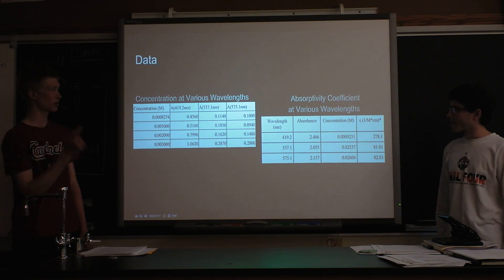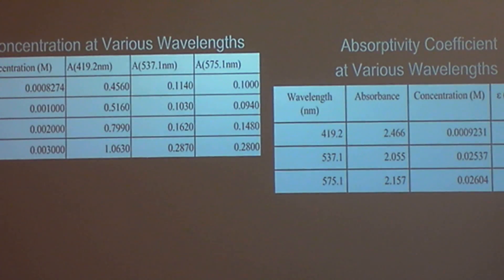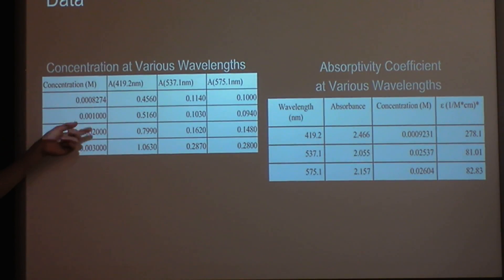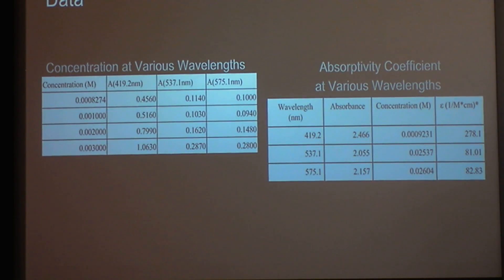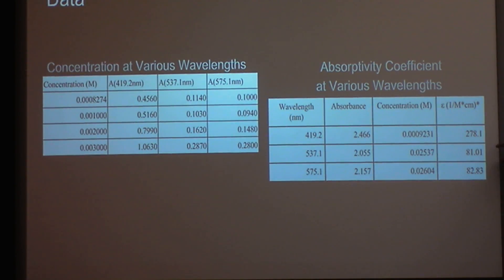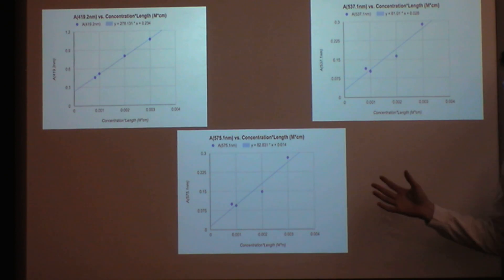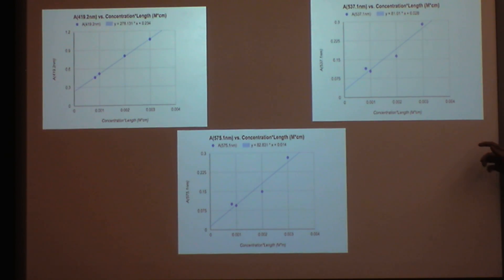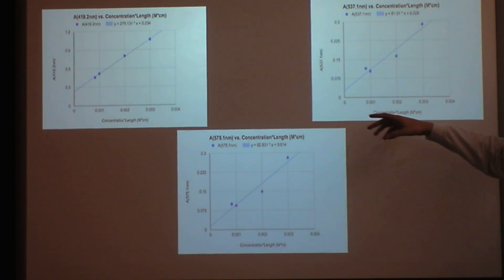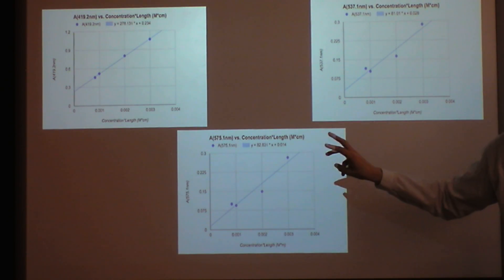Those peaks were at three specific wavelengths. We took known concentrations of blood and measured absorbance at those wavelengths using the spectrophotometer. Using the Beer-Lambert law, we were able to calculate the molar absorptivity coefficient (epsilon). By rearranging the Beer-Lambert law so the slope equals the absorptivity coefficient, we plotted absorbance (which is unitless) versus concentration times path length. The three wavelengths were 419 nm, 537 nm, and 571 nm — all three peaks we identified. The path length is constant at 1 cm, which is the width of the cuvette.